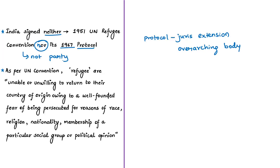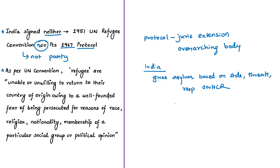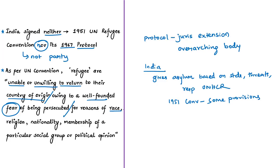India gives asylum to a large number of refugees from neighboring states based on human rights standards and respects UNHCR's mandate, adhering to some provisions of the 1951 Convention. The Convention defines a refugee as a person unable or unwilling to return to their country of origin due to a well-founded fear of persecution on grounds of race, religion, nationality, membership of a particular social group, or political opinion.